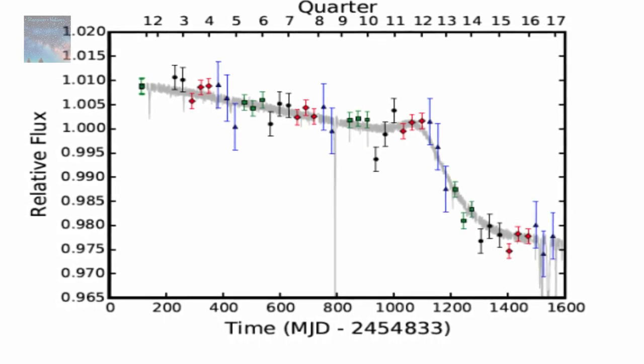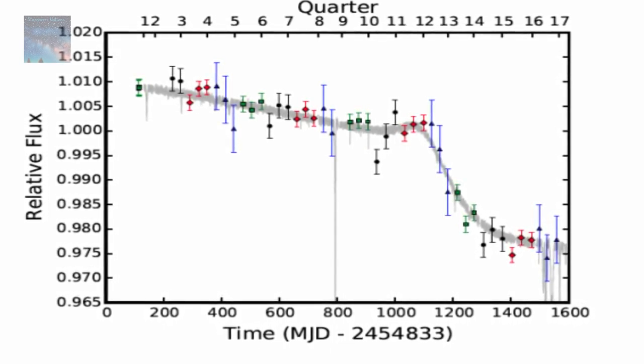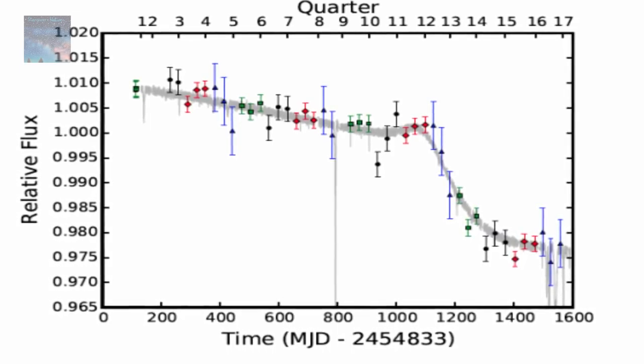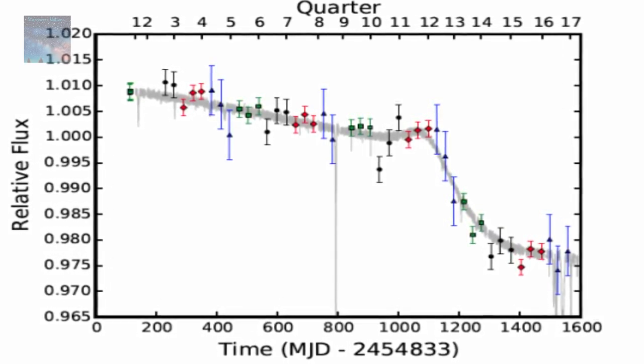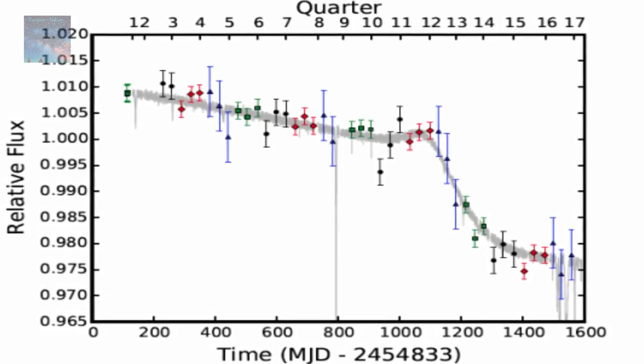But Tabby's star has been experiencing erratic dips of up to 22%, and there's no periodic orbiting going on here, just a bunch of irregular light-blocking shapes with no discernible pattern to them.